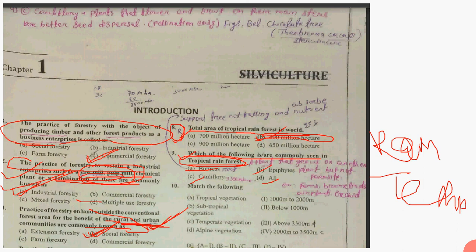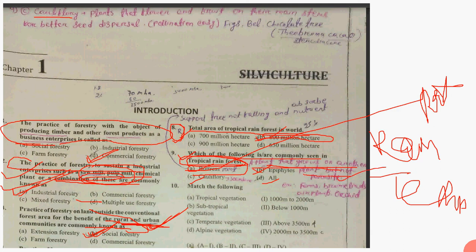The options include buttress roots, epiphytes, cauliflory, and all of these. In the next slide, definitions are explained. Cauliflory is where plants get flowers and fruits on their main stem for better seed dispersion and ease of pollination. An example is the chocolate tree, with scientific name Theobroma cacao.